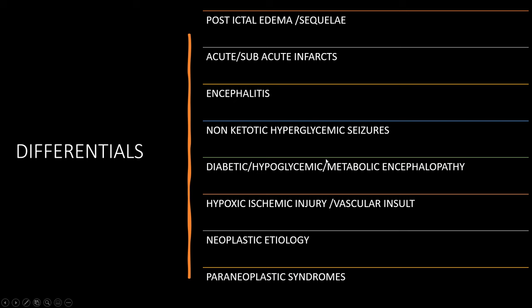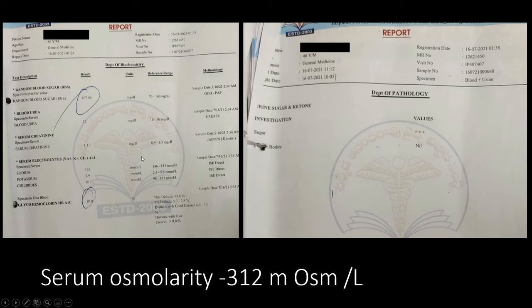Coming to the differentials: postictal edema or sequelae, acute or subacute infarcts, encephalitis, non-ketotic hyperglycemic seizures, diabetic or hypoglycemic or metabolic encephalopathy, hypoxic ischemic injury or vascular insult, neoplastic etiology, or paraneoplastic syndrome should be considered. Investigations: urine glucose 3+, ketone bodies negative, random blood sugar 407, HbA1c 10 — indicating poor glycemic control. Sodium 137 (lower limit of normal), potassium normal, chlorides normal, urine sugar 3+, ketone bodies negative, fasting blood sugar 393, post-prandial 414.